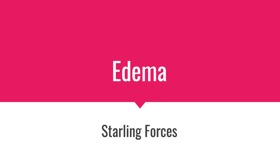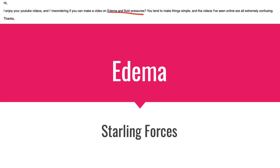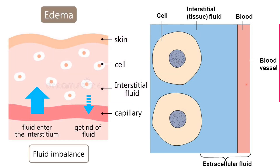Welcome back. This video was based on a specific request — I'm going to make edema very simple. I want you to understand that normally fluid should be kept inside blood vessels, and we do not have edema. Edema happens if this fluid cannot be kept inside blood vessels and it accumulates in tissues or in the interstitium.